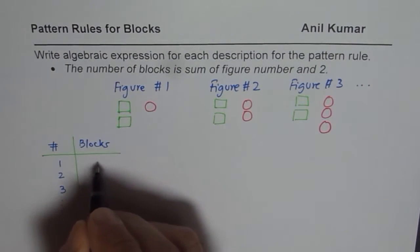Another way to do it is you can make a T table. Now in the T table, write down the figure number. Let's figure numbers are one, two, three and so on. And then write the number of blocks. So let's write the number of blocks. Total number of blocks are three, four and five.